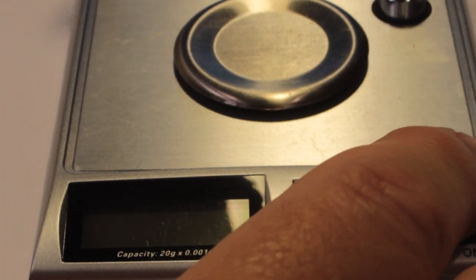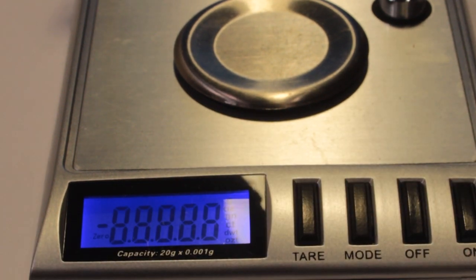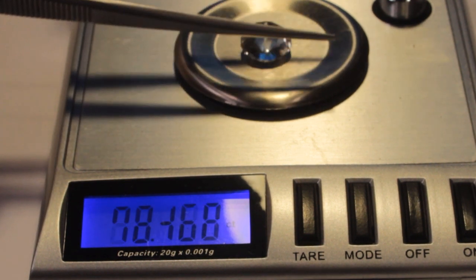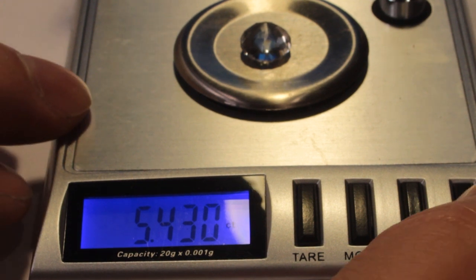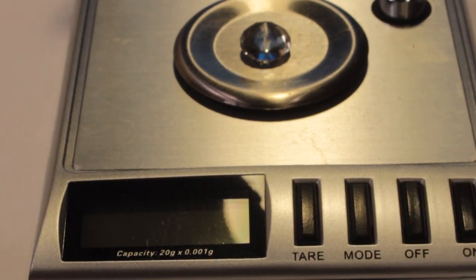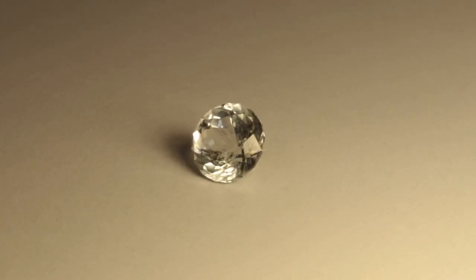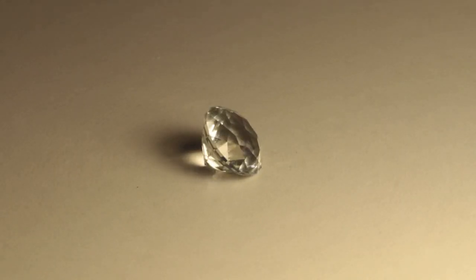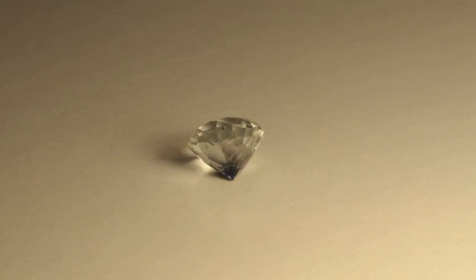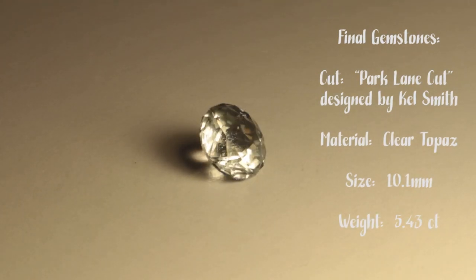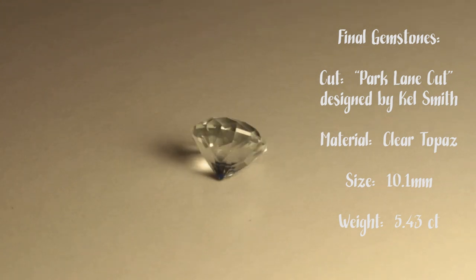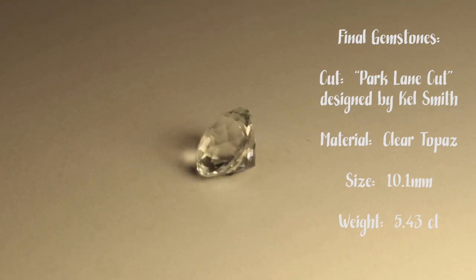The Park Lane cut is an interesting gem design. It is unique in that there's no table, but other than that feature, it's basically a standard round brilliant design. I would say this design is suitable for any cutter, and a brand new cutter could very well cut the Park Lane cut as their first stone. I don't think you'll have any issues with this design. I did have some issues with the topaz that I was cutting. I had some polishing issues with my Greenway lap, getting some hairline scratches, but when I switched to a tin lap with aluminum oxide, I had no problems. The stone polished right up.